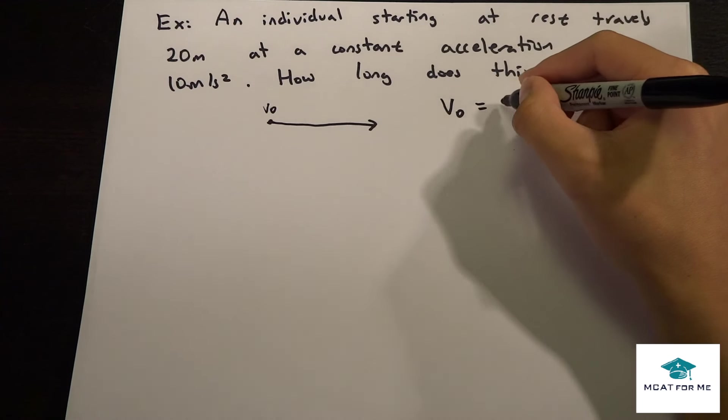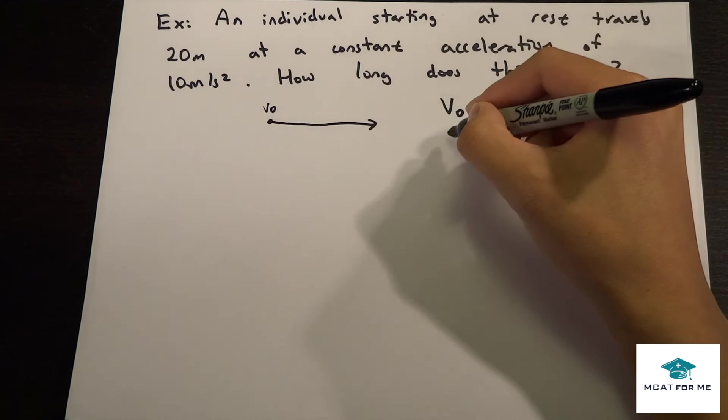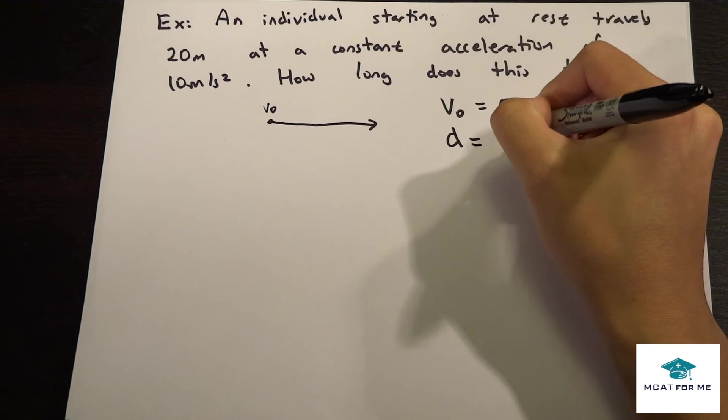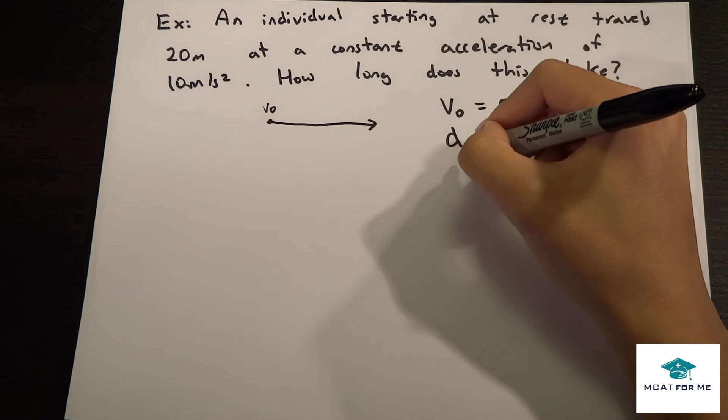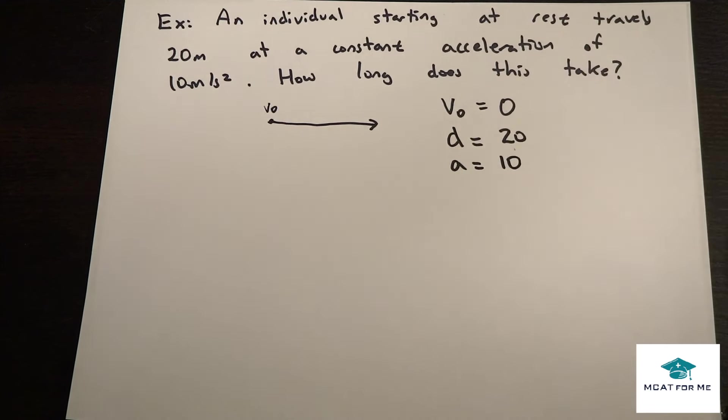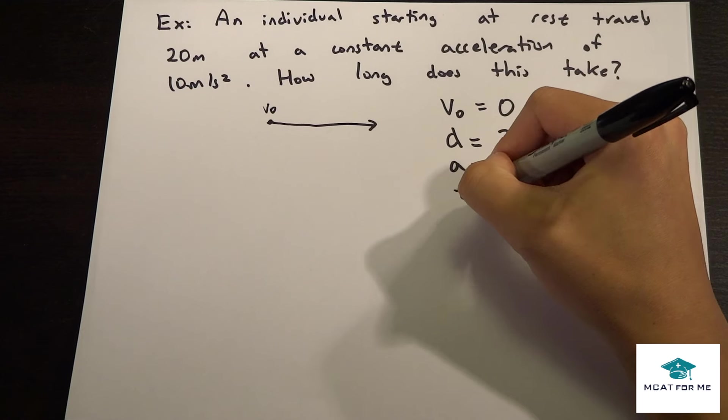So V0 is what? Zero, right? Because he starts from rest. He travels 20 meters. So that's d equals 20 at a constant acceleration of 10, right? We want to find t.